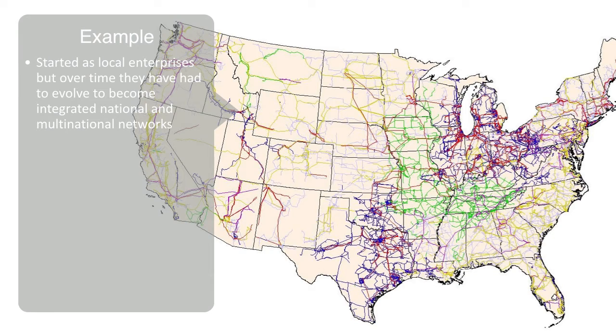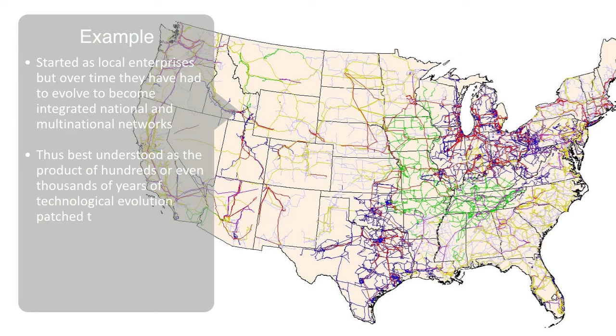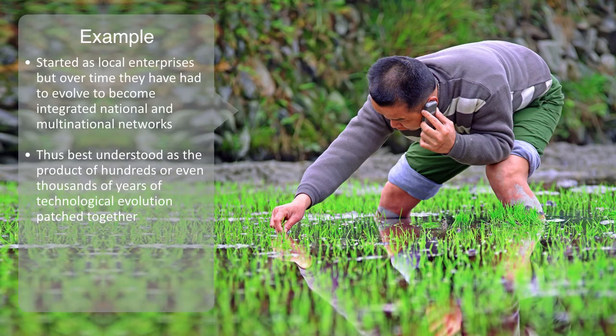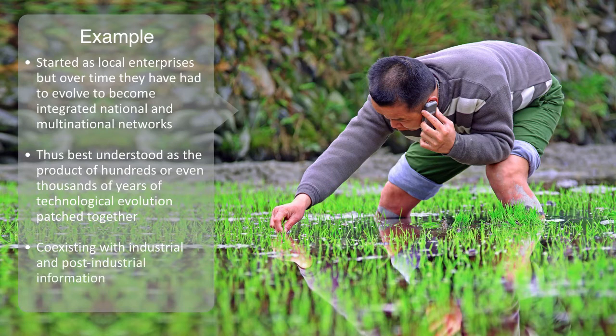The industrial systems that we inherit today, like this power grid, were not designed as integrated systems, but gradually evolved over time and are thus best understood as the product of hundreds or even thousands of years of technology evolution patched together. And we can see this most clearly within emerging markets. Due to recent rapid economic growth, we can see pre-industrial technologies coexisting with industrial and post-industrial information technologies all in one big mashup.